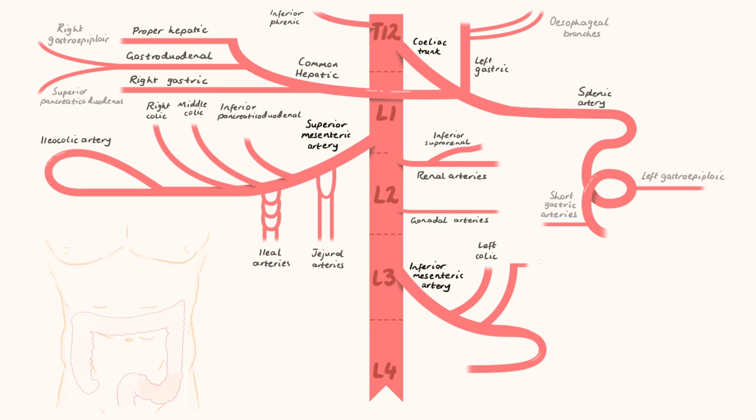The sigmoid colon, thus the sigmoid branches we've got here. Last, but certainly not least, we have the end of the abdominal GIT covered. This is the superior rectal artery.